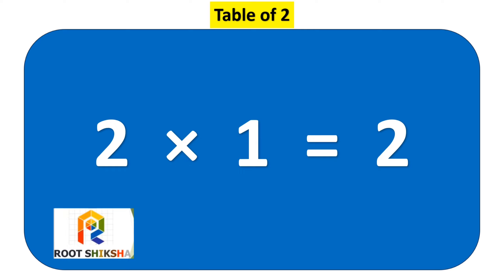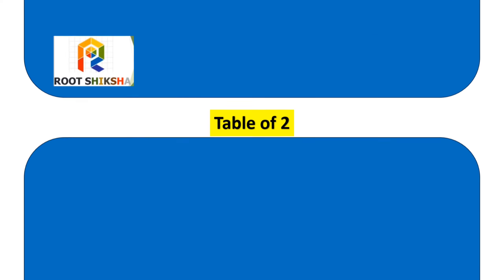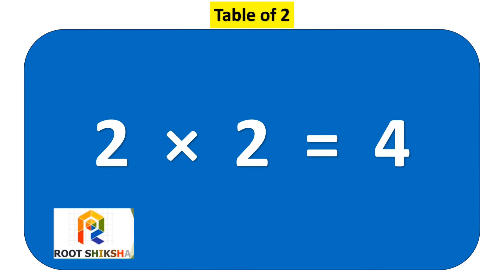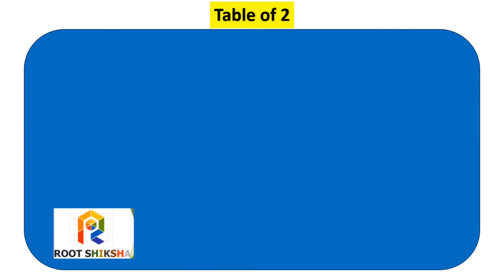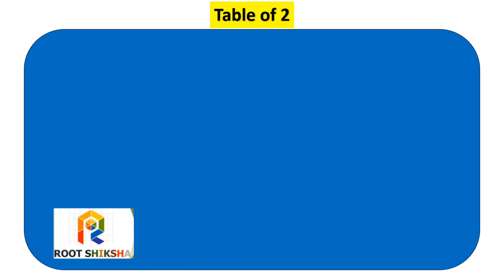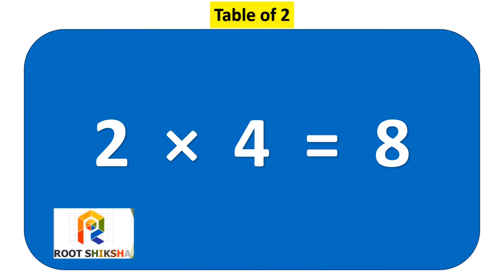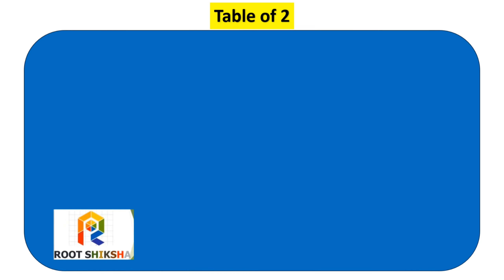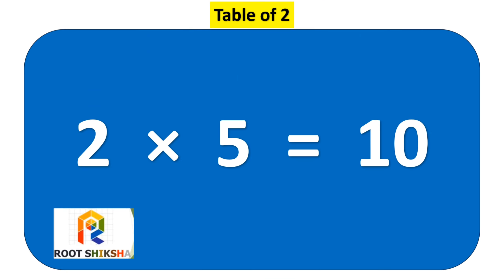Two ones are two. Two twos are four. Two threes are six. Two fours are eight. Two fives are ten.